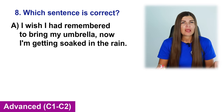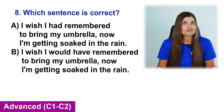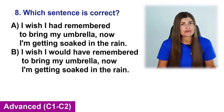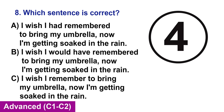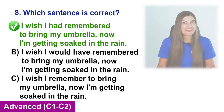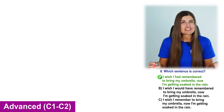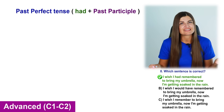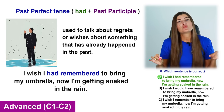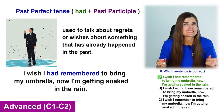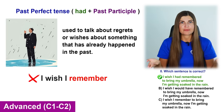Which sentence is correct? A. I wish I had remembered to bring my umbrella. Now I'm getting soaked in the rain. B. I wish I would have remembered to bring my umbrella. Now I'm getting soaked in the rain. C. I wish I remembered to bring my umbrella. So I'm getting soaked in the rain. The correct sentence is A. In English, the past perfect tense — had plus past participle — is used to talk about regrets or wishes about something that has already happened. The phrase I wish I had remembered is an example of the past perfect tense expressing regret about not remembering to bring an umbrella. We cannot say I wish I remembered — that's incorrect.